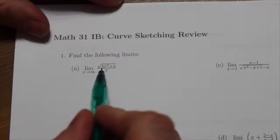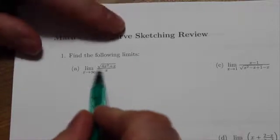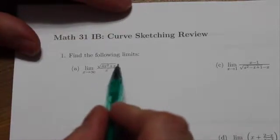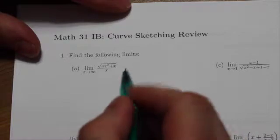As x gets really, really large, in the numerator here, underneath the square root, the dominant term is going to be the 4x squared. That plus x isn't going to mean anything.